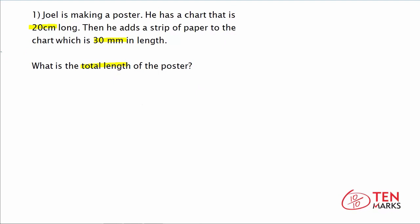What we want to know is what is the total length of the poster. Let's notice a few things about this word problem. First, we have one measurement, 20 centimeters. The next measurement we have is 30 millimeters. Now, millimeters and centimeters, we don't have the same units. And in order for us to find the total length, we need to convert millimeters into centimeters.